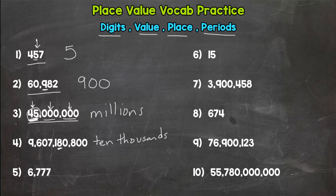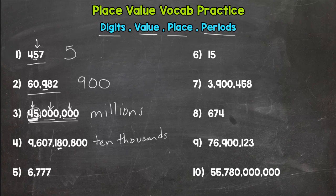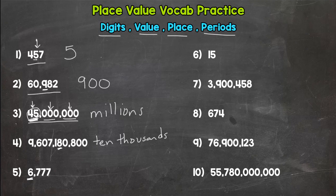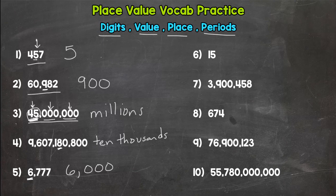If you put eighty thousand, you put the value, which is different from the place. All right, number five: what is the value of the underlined digit? The value of that underlined digit is six thousand. That six is worth six thousand.